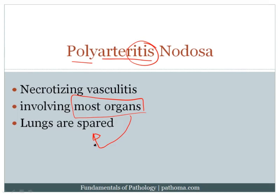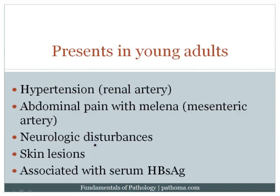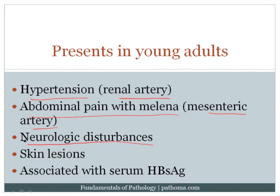Polyarteritis nodosa presents in young adults, and depending on which vessel is involved you'll have different signs. If the renal artery is involved, the patient may get hypertension. If the mesenteric artery is involved, the patient will have abdominal pain with melena. CNS involvement causes neurologic disturbances. Classic findings include hypertension, abdominal pain with melena, neurologic disturbances, and skin lesions. A high-yield association: patients with polyarteritis nodosa often have a positive serum hepatitis B surface antigen.